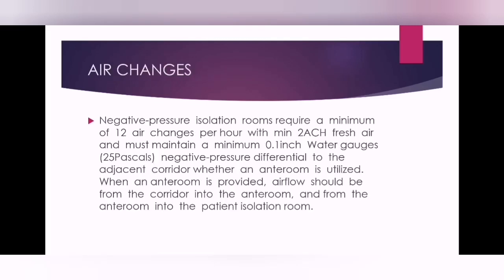For air changes, you need to calculate how much air is needed for the isolation room. You will need 12 air changes per hour (ACH). Calculate the volume of the room, multiply by the air changes, and divide by 60 to get the CFM of the room. For fresh air, you need 2 ACH — multiply the volume of the room by 2 and divide by 60 to get how much fresh air you need to supply to the room.